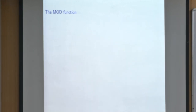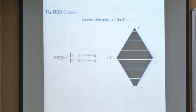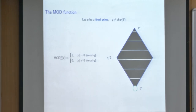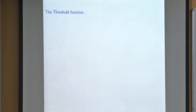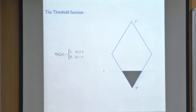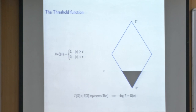The mod function is defined depending on the characteristic of the field — we choose a prime not equal to the characteristic. It takes value 1 when the input weight is 0 mod q and 0 otherwise, with degree Ω(n). The threshold function generalizes both majority and OR: it takes value 1 whenever the input weight is at least t, and its degree is also Ω(n). These are examples where the degree is high, motivating approximation by low-degree polynomials.